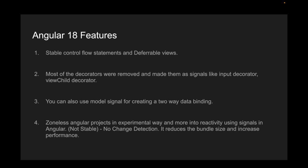Now even they are using a model signal for creating two-way data binding, so instead of using ng-model you can use model signals. The major change is they have removed zone.js — from now onwards Angular projects are zoneless projects, in an experimental state, and more into reactivity. Angular is mostly focusing on reactivity using signals. There is no change detection via zone.js from Angular 18, and it also reduced a lot of bundle size and increased performance by removing zone.js.